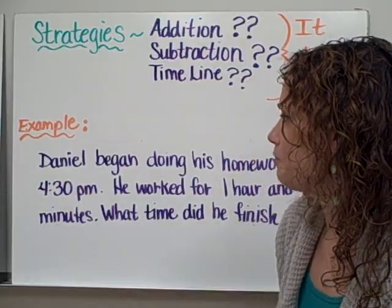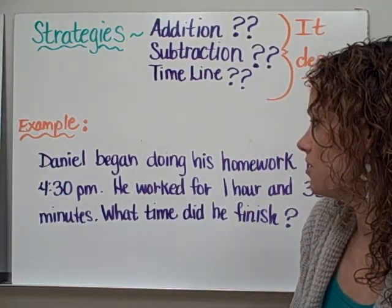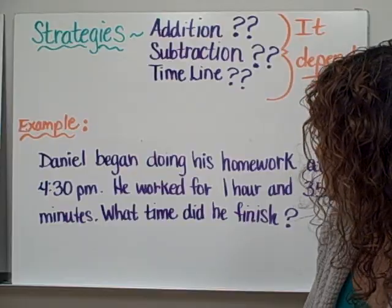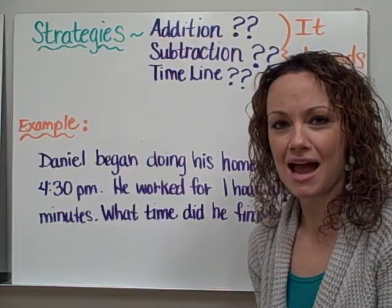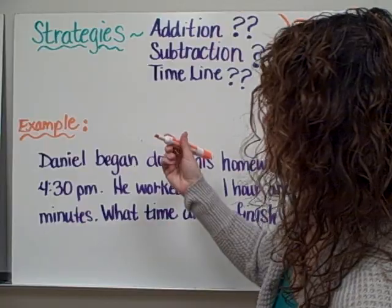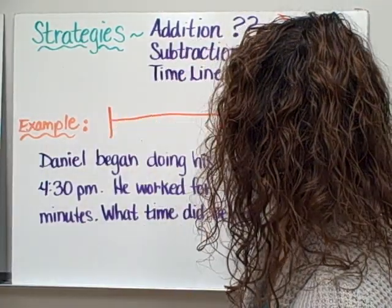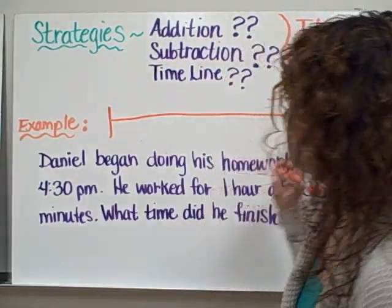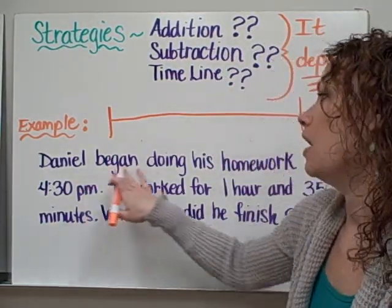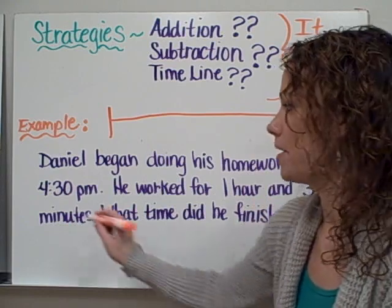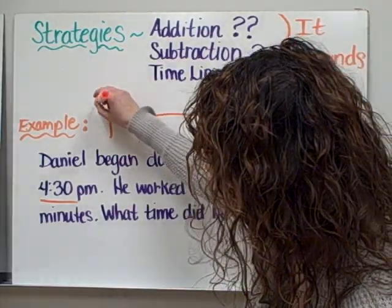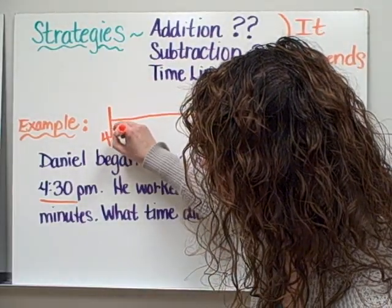Let's take a look at our first example problem. Daniel began doing his homework at 4:30 p.m. He worked for 1 hour and 35 minutes. What time did he finish? I like to draw a little timeline to help me see the time that has passed. To do this, you would just create a line and we're going to be labeling this line with time. We know that Daniel began at 4:30 p.m., so I'm going to label the first spot of my line with 4:30 p.m.